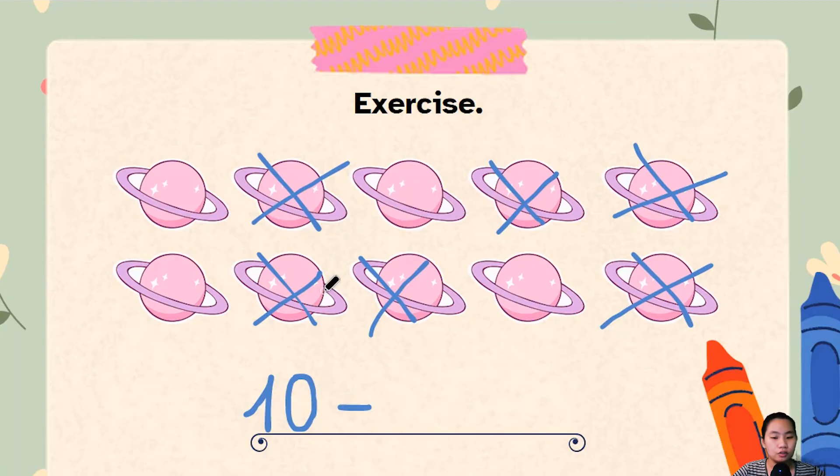So ten minus how many did I cross out? One, two, three, four, five, and six. So I've crossed out six of them.